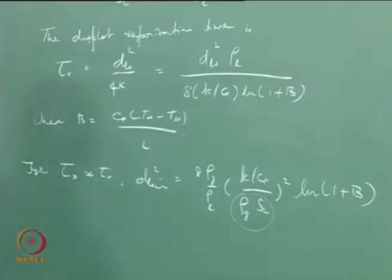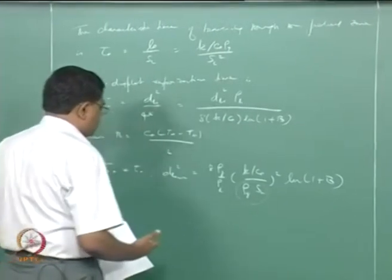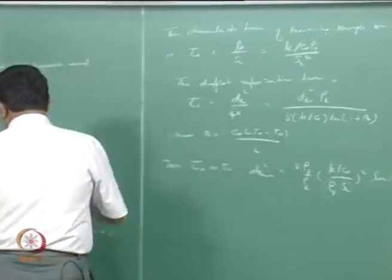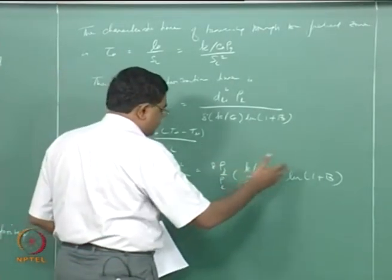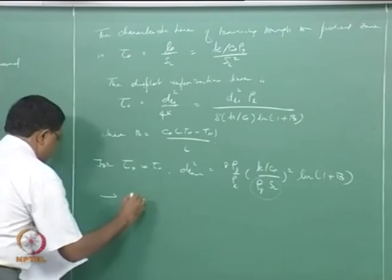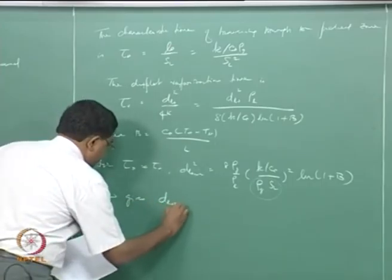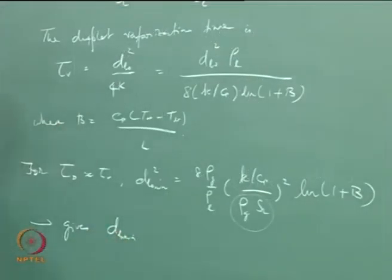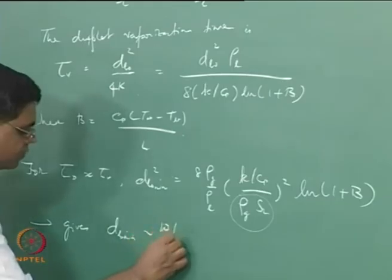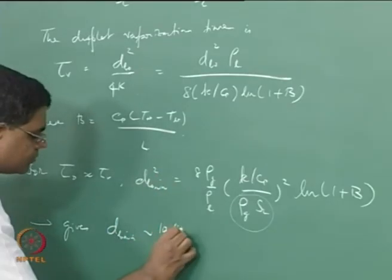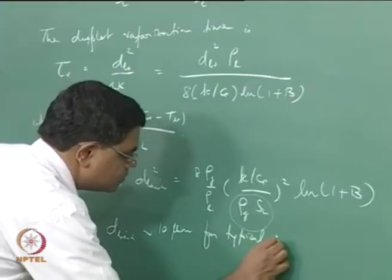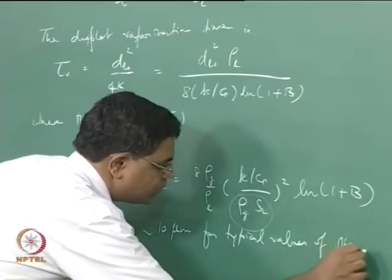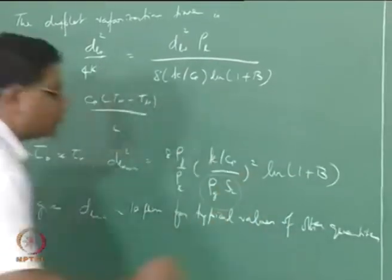For typical values, assuming approximately stoichiometric mixture for the fuel and air, with rho_l / rho_g of the order of 1000, this gives d_L0_minimum of the order of 10 micrometers for typical values of the other quantities.